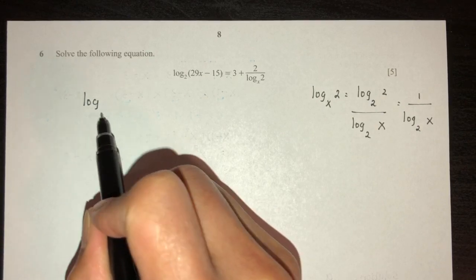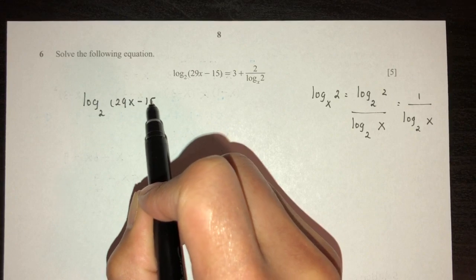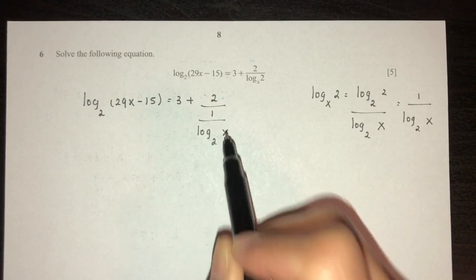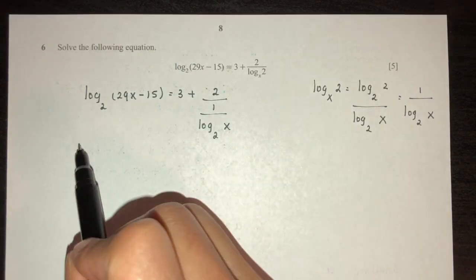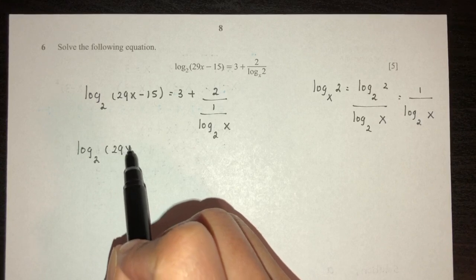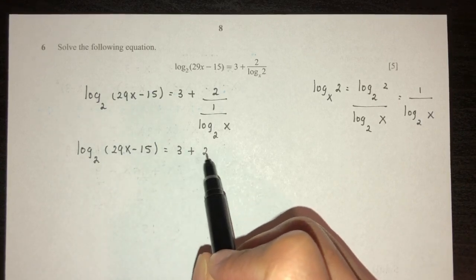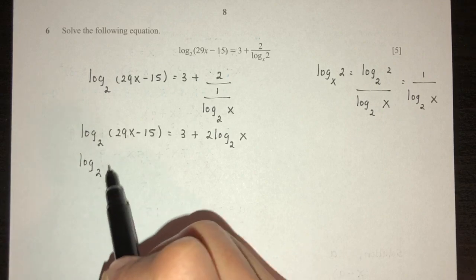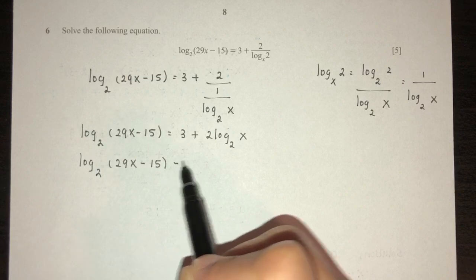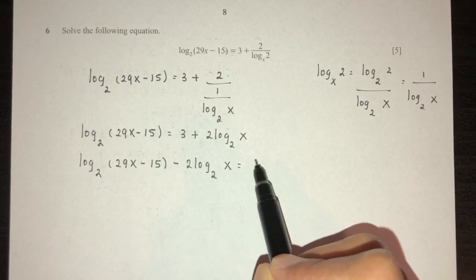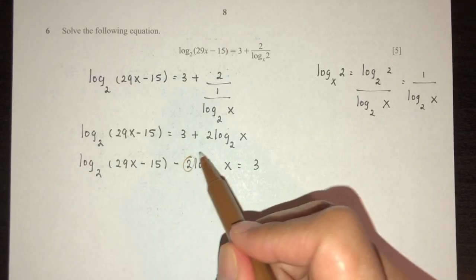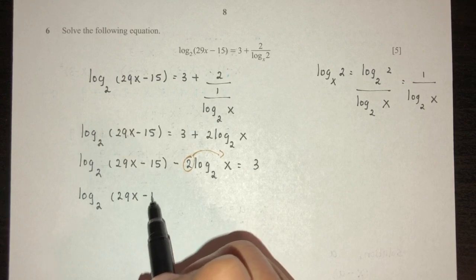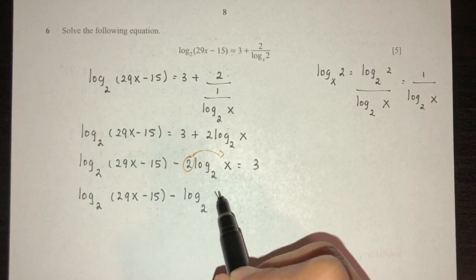Sending all logs to one side: log₂(9x − 15) − 2 log₂ x = 3. The coefficient 2 moves to the power: log₂(9x − 15) − log₂(x²) = 3. Combining using the subtraction rule: log₂((9x − 15) / x²) = 3.